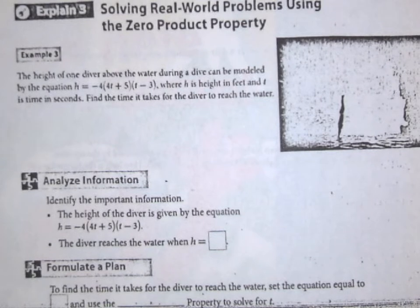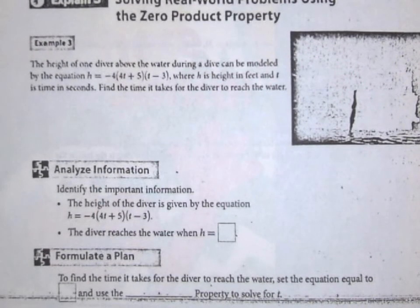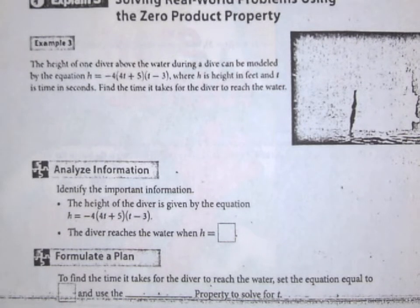The height of one diver above the water during a dive can be modeled by the equation h = -4(4t + 5)(t - 3), where h is height in feet and t is time in seconds. Find the time it takes for the diver to reach the water.